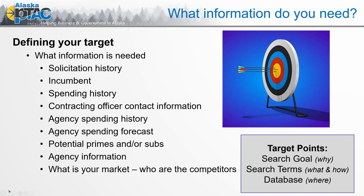If you say 'I want business opportunities' — that's too broad. 'I want to do business with the government' — the government is vast. What layer? What level? Which agency? What location? We really need to define: what are we looking for? What is our search goal? What is the search term? How are we defining it? Depending on the database, what type of data elements are needed, and where are we going to do the search?